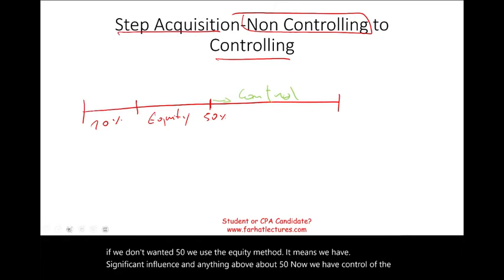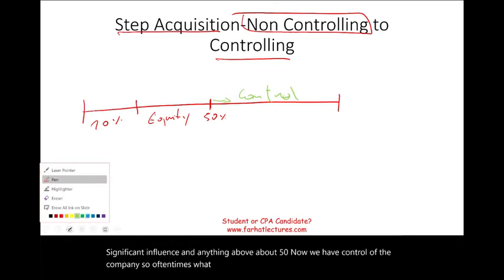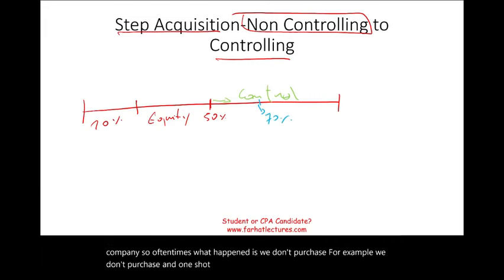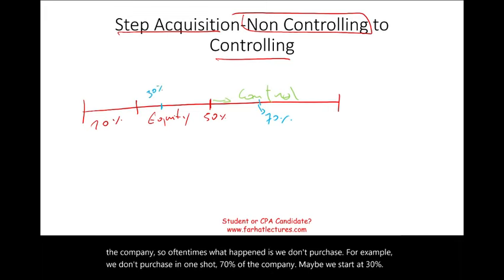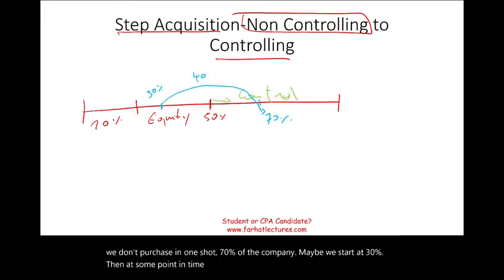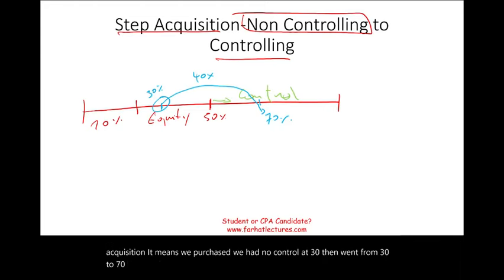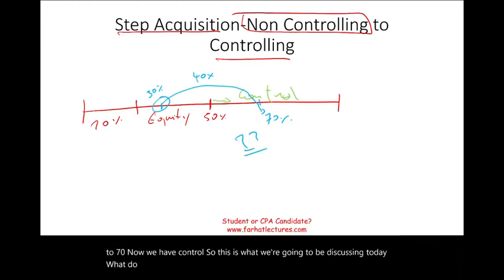Often what happens is we don't purchase, say, 70% of the company in one shot. Maybe we start at 30%, then at some point in time we buy an additional 40%. This is called the step acquisition — we had no control at 30%, then went from 30% to 70%, and now we have control. This is what we're going to be discussing today.